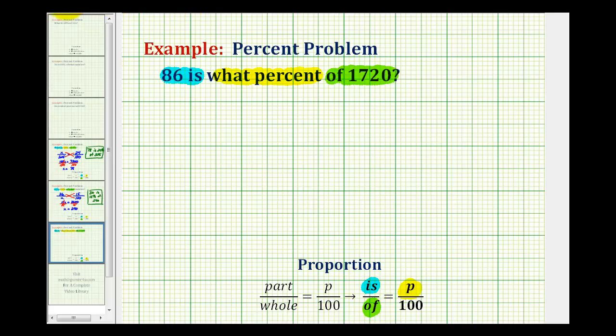So let's go ahead and set this up. Again, we don't know the percentage, so we'll have the variable p in our numerator over 100. And then for the other ratio, we're going to have 86 over 1720.